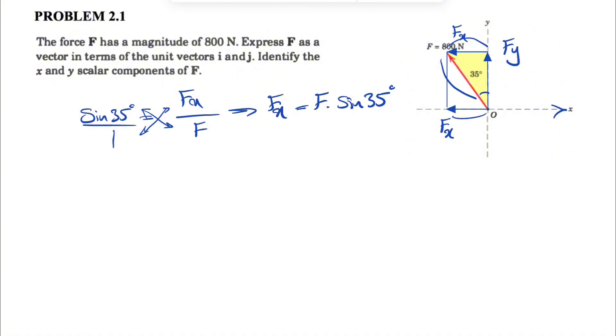If we look at Fx, we'll see that it acts along the negative x axis. So if we want to show our Fx in vector form, it will be negative 800 newtons times sine of 35 degrees, and the unit vector for x would be i.